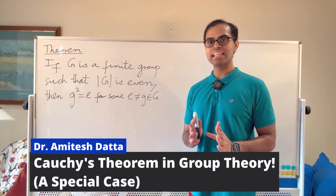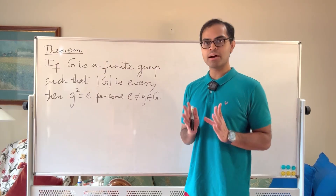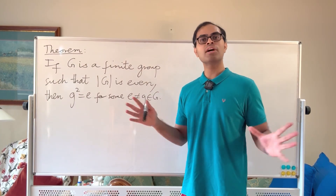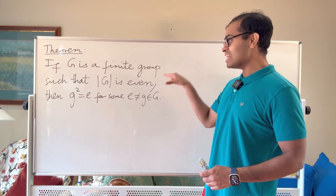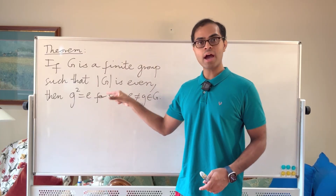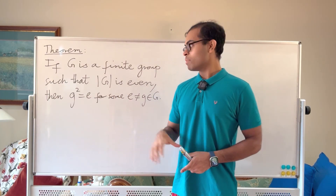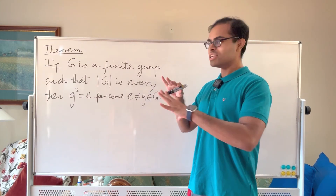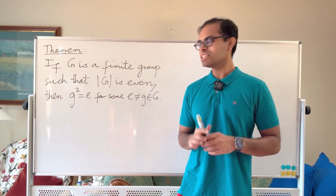You're going to love this beautiful, elegant group theory theorem: if a finite group G has an even number of elements — for example, six elements, 28 elements, 2,916 elements, but not 17 — then there is an element G in the group that's not the identity, such that G squared is equal to the identity.